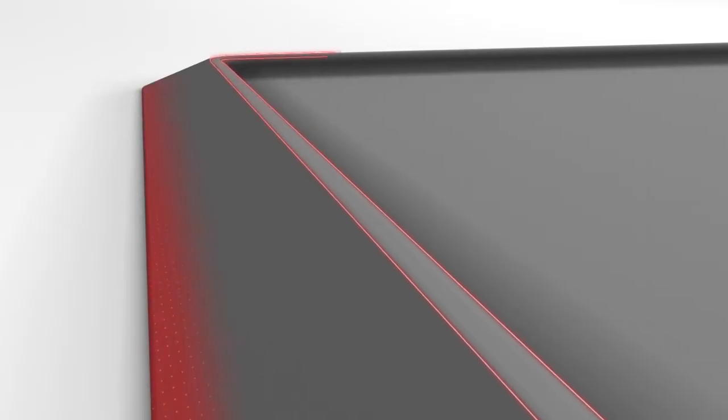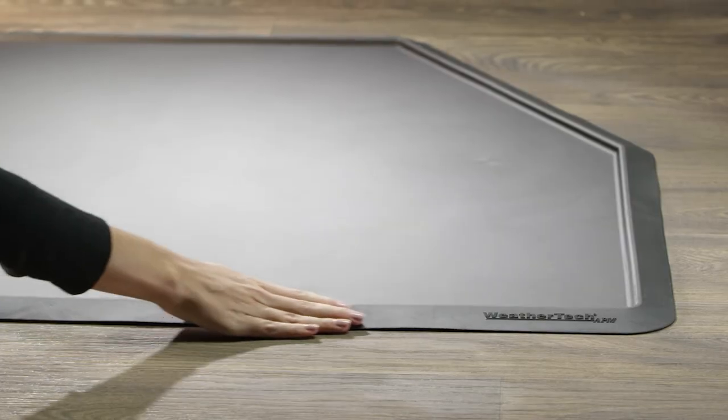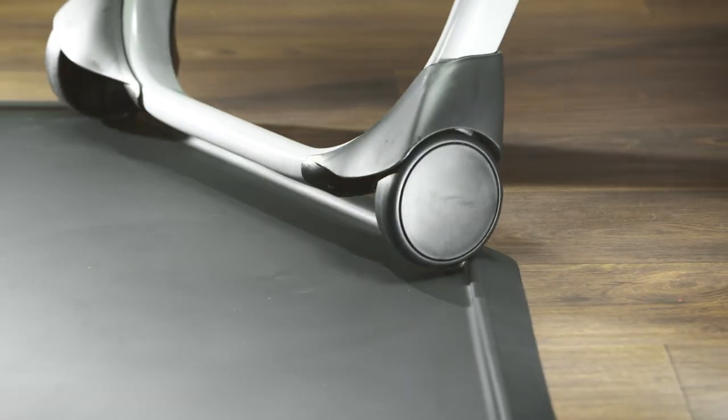The sloping outer edge of the All-Purpose Mat is ideal for heavy equipment, allowing you to roll lawn mowers, snow blowers, children's high chairs, and more directly onto it.